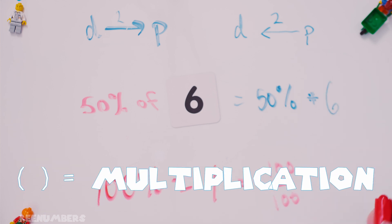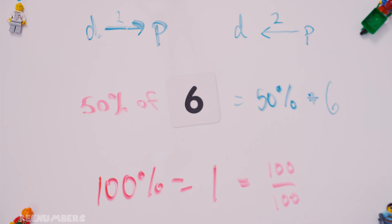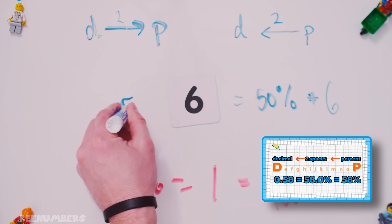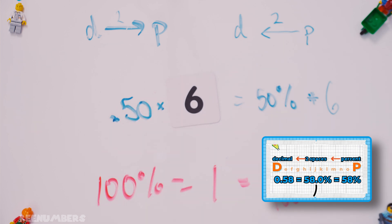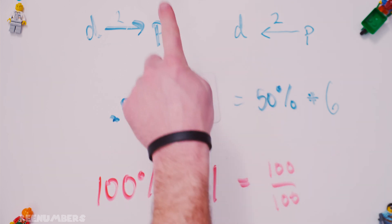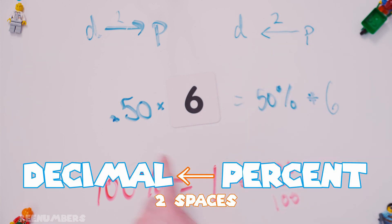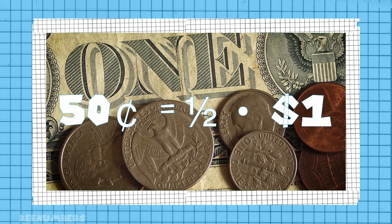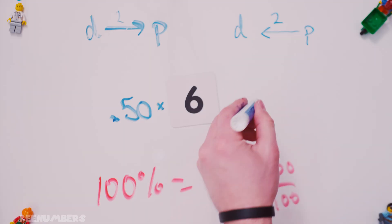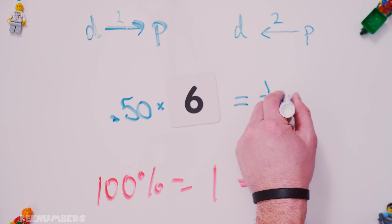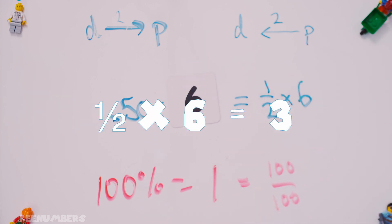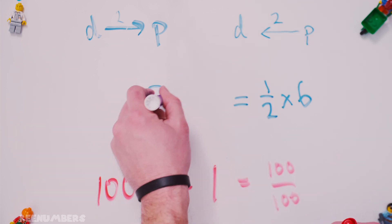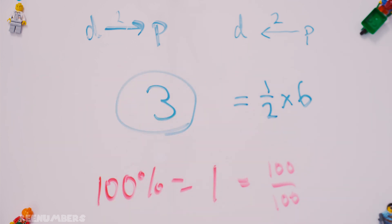50% of six — that's 50% times six. But what is 50%? We know that 50% is the same thing as 0.5, because you move that percent backwards two spaces. 0.50. Half of six. 50 cents. Half of a dollar. What is half of six? Too easy — you can do that with both eyes closed, sleeping. Three is your answer.